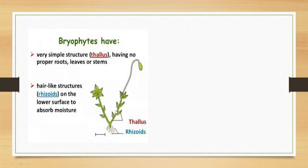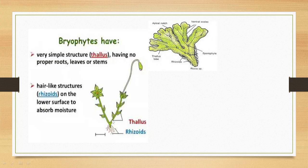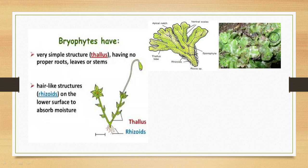They have a stem-like structure, which we can call the thallus, with tiny leaf-like structures. This is a type of moss plant. There are two types of Bryophytes: mosses and liverworts. This is a picture of a liverwort. Liverworts grow dorsi-ventrally flattened, as you can see in this naturally growing liverwort.